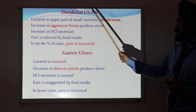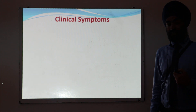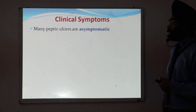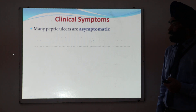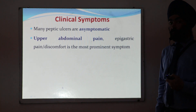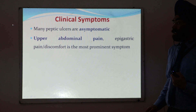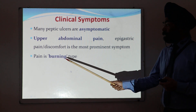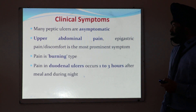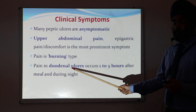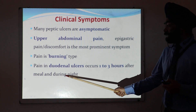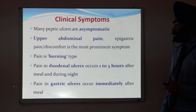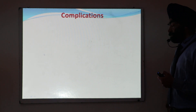Regarding clinical symptoms, most of the time persons are asymptomatic. If there is pain, it presents as upper abdominal pain or discomfort — a burning type of pain. In duodenal ulcer, pain occurs one to three hours after food and mainly at night. In gastric ulcer, pain occurs immediately after taking a meal. These are the main clinical symptoms.